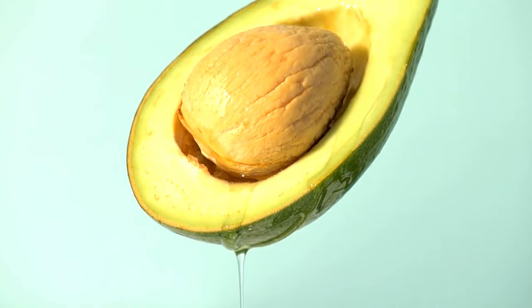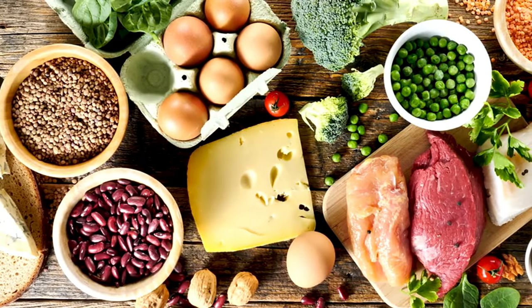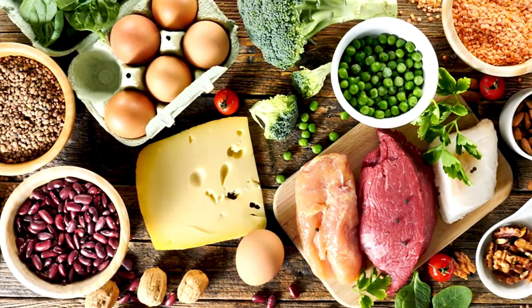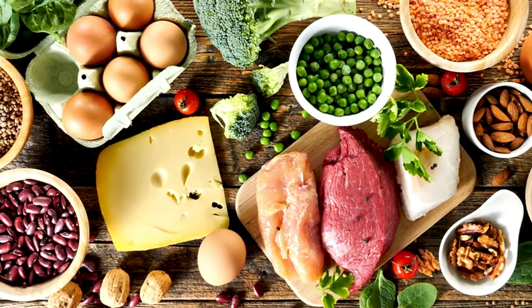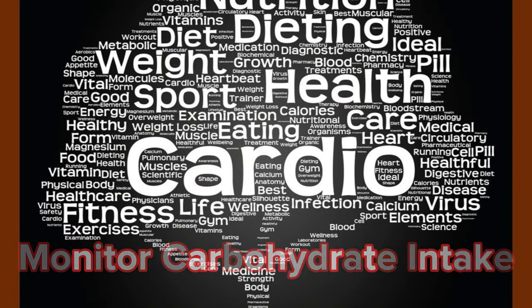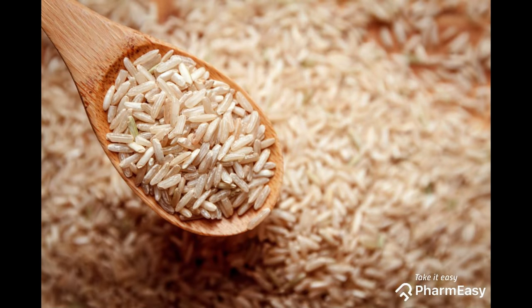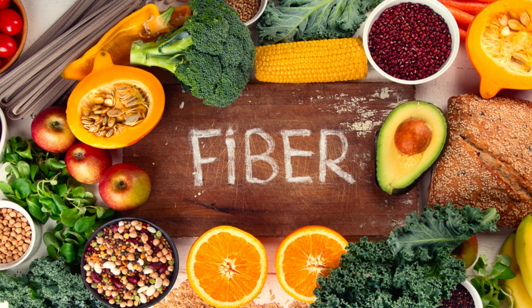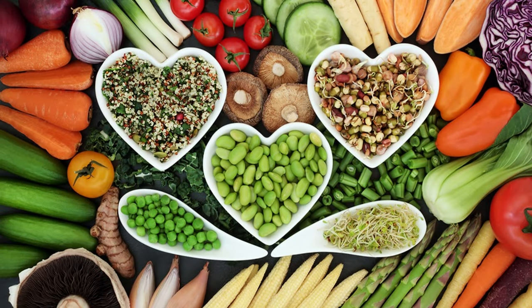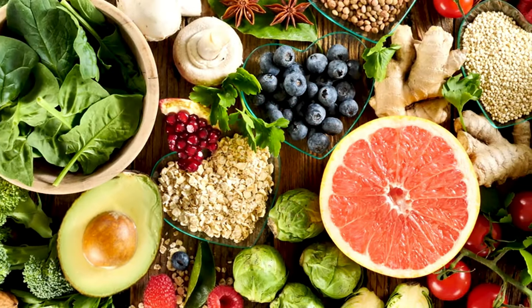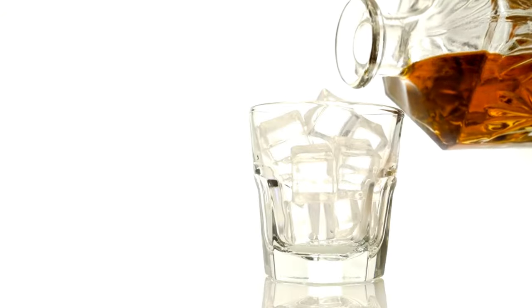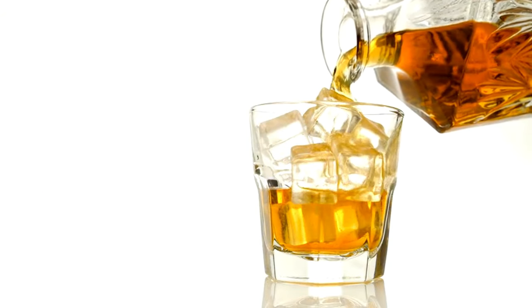Limit saturated fats found in red meat and dairy products, and avoid trans fats often present in processed and fried foods, as they can exacerbate liver damage. Third, monitor carbohydrate intake: refined carbohydrates and sugary foods can contribute to insulin resistance and fat accumulation in the liver. Instead, focus on whole grains and fiber-rich options like brown rice, whole wheat bread, and quinoa. Fourth, increase fiber intake: fiber-rich foods such as whole grains, vegetables, fruits, and legumes aid digestion, manage blood sugar, and reduce liver fat buildup.